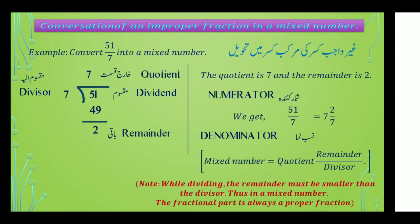خارج قسمت مرقب قصر برابر خارج قسمت باقی بٹے مقسم ملے۔ تقسیم کرتے وقت باقی مقسم ملے سے چھوٹا آنا چاہیے — while dividing, the remainder must be smaller than the divisor. Thus in a mixed number the fraction part is always a proper fraction.